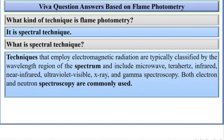Techniques that employ electromagnetic radiation are typically classified by the wavelength region of the spectrum and include microwave, terahertz, infrared, near-infrared, ultraviolet-visible, x-ray, and gamma spectroscopy. Both electron and neutron spectroscopy are commonly used.